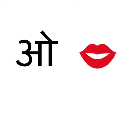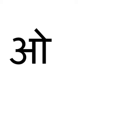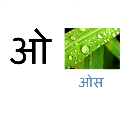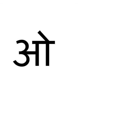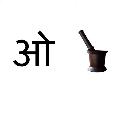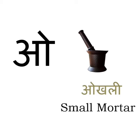O say o's. O's means dew. Dew means drops of water that are seen on the leaves early in the morning. O say oakly. Oakly means small water which mamma uses in the kitchen for grinding ginger and garlic.